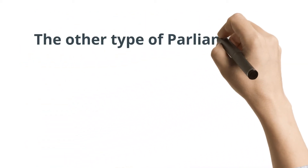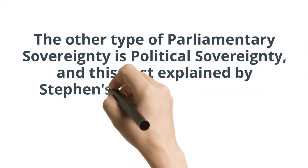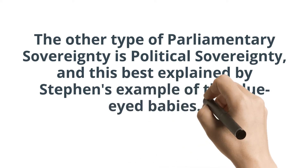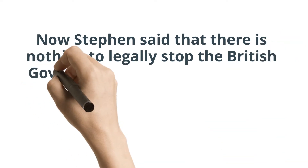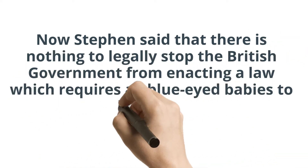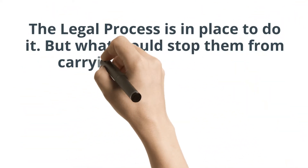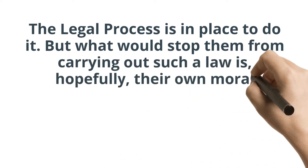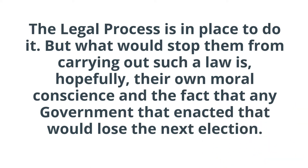The other type of sovereignty is political sovereignty, and that is best explained by Stephen's example of the blue-eyed babies. He said that there is nothing to legally stop the British Parliament from passing a law that says all blue-eyed children must be killed. The legal process is in place to do it. But what would stop them from doing that and carrying out such a law is, hopefully, their own moral conscience,